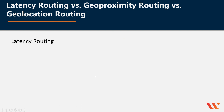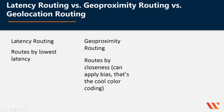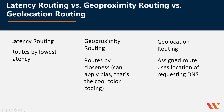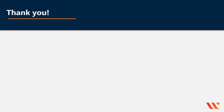To summarize: latency routing routes by the lowest latency; geoproximity routing routes by closeness and can apply a bias, as we saw with the color-coded map; and geolocation routing assigns routes using the location of the requesting DNS query. Thanks for watching — I hope you've enjoyed this brief presentation on the differences between latency routing, geoproximity routing, and geolocation routing.